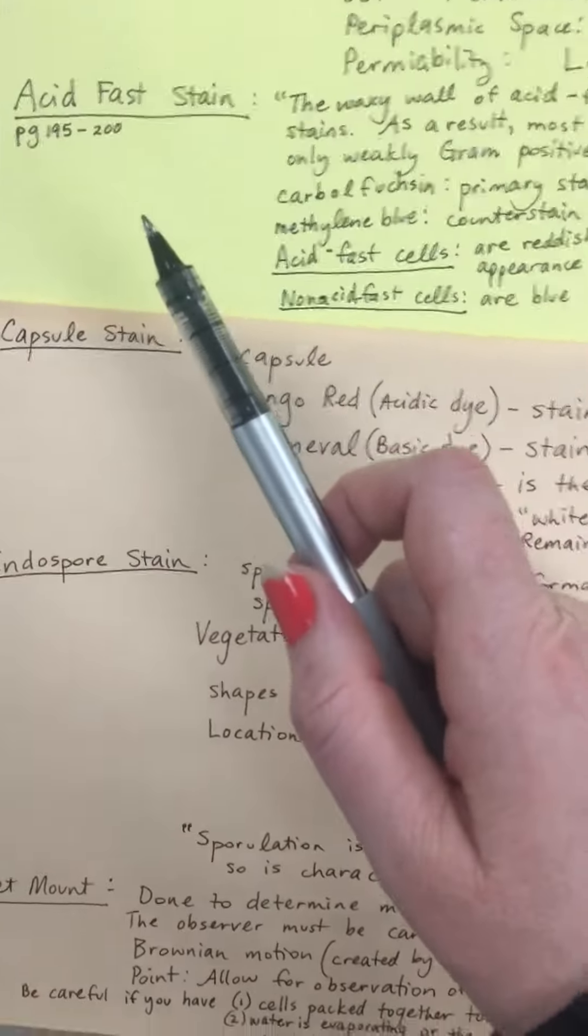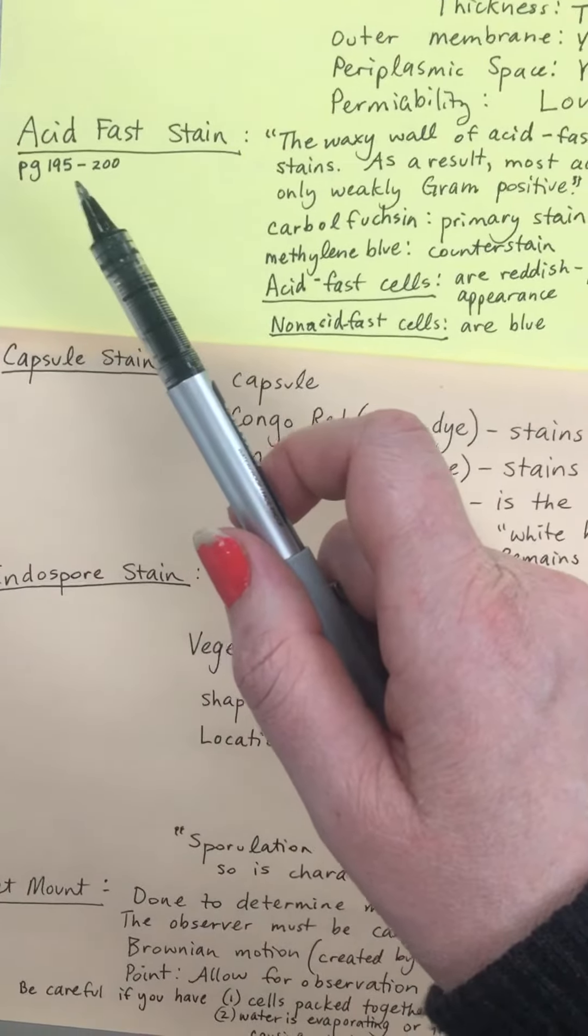Next, let's focus on our acid-fast stain found in page 195 to 200.